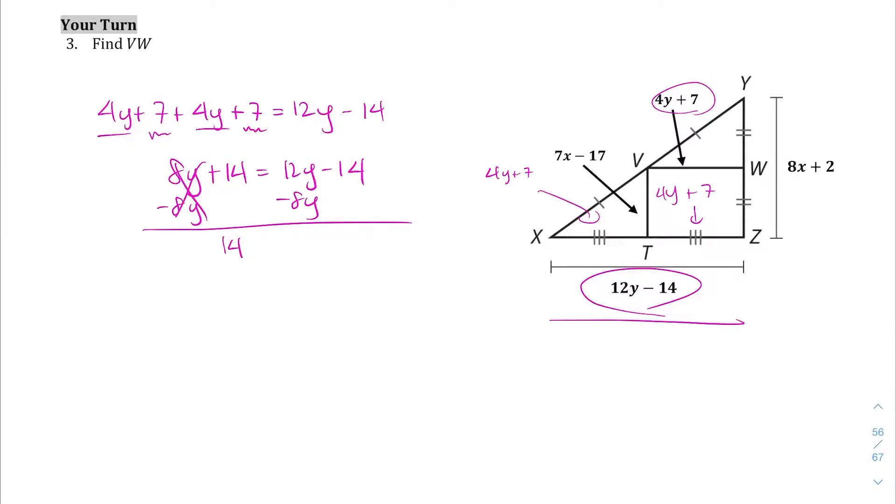That'll make that go away. We get 14 equals 4Y minus 14. Then I'm going to add 14 to both sides. We should get 28 equals 4Y. Divide by 4, we should get 7 equals Y, and then we're going to plug it right back in there.